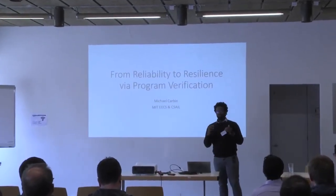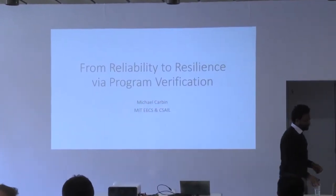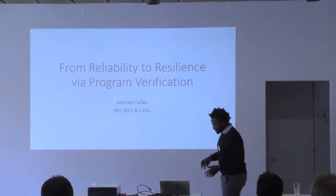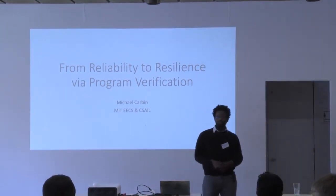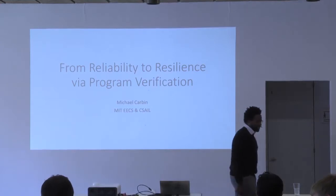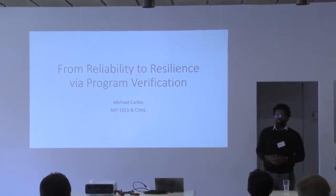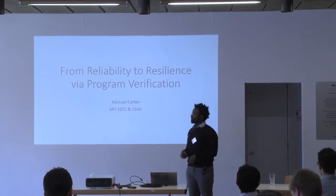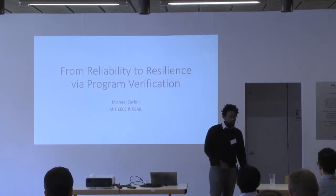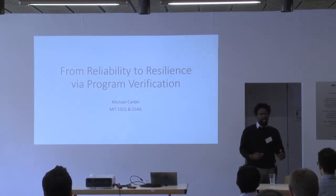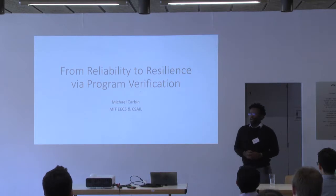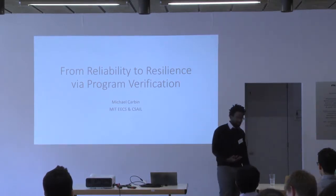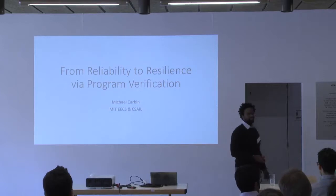Today I'm going to talk about moving from reliability — which is what we traditionally think of as building reliable software that perhaps always computes the correct result, or thinking about the probability that my software is going to compute the correct result — to resilience, where we're talking about how we can operate even in the presence of failure and still return some results, perhaps even a different result.